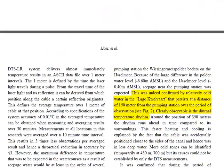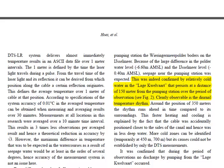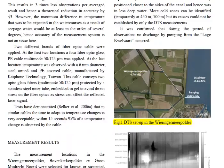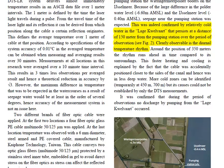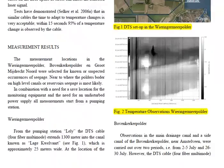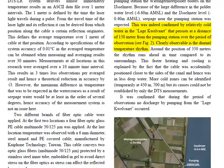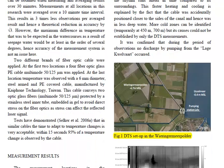The authors describe in detail the cables and instruments used, which are important if you're doing this yourself. The first case they look at is in the Wieringen Meerpolder. They located the cable in a ditch called the Lager Kwelvaart — roughly translated as the 'low seepage canal' — starting at a pumping station. There's a huge water level difference of more than four meters with the lake outside, so especially near the dikes, a lot of seepage was expected. The cable was simply rolled out of a boat starting at the pumping station into the canal.